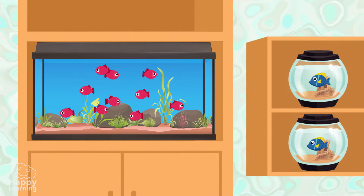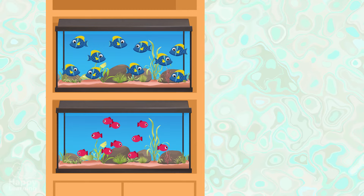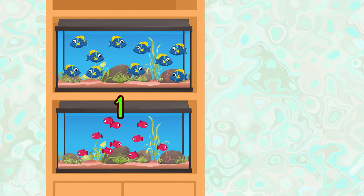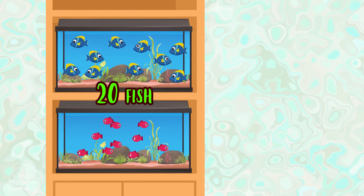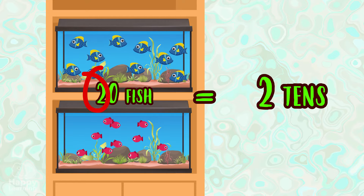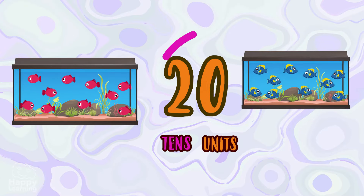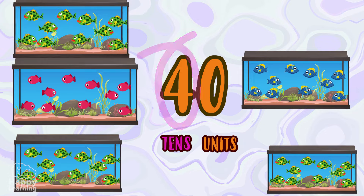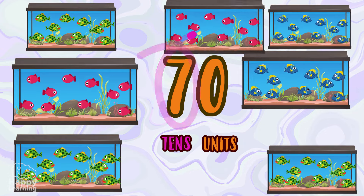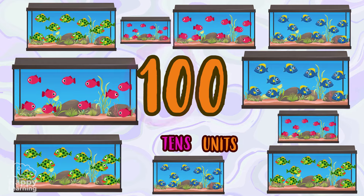Now imagine that the number of fish is increasing and you fill two fish tanks, and each tank has ten fish. We would have two lots of ten. The tens start from ten and go up in tens: ten, twenty, thirty, forty, and so on up to the number ninety.